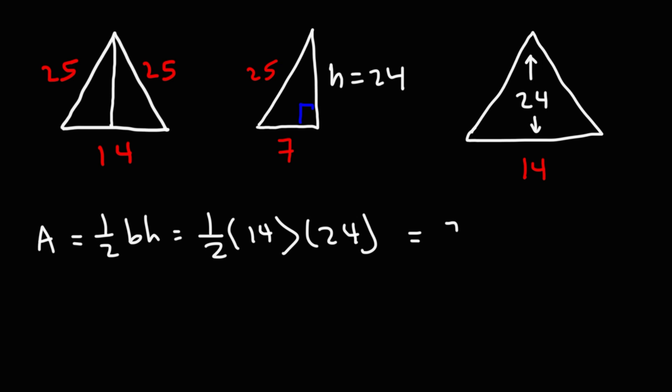1 half of 14 is 7. And so, this becomes 7 times 24. So, to do it mentally, let's break down 24 into 20 plus 4. 7 times 20. If you have 7 $20 bills, how much money do you have? That's going to be 140. And then, 7 times 4 is 28. Adding those two together, we get 168. So, that's the area of the triangle.